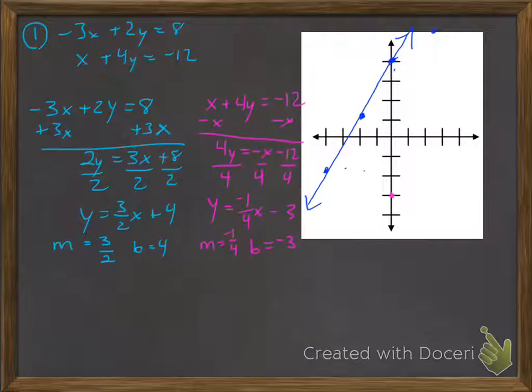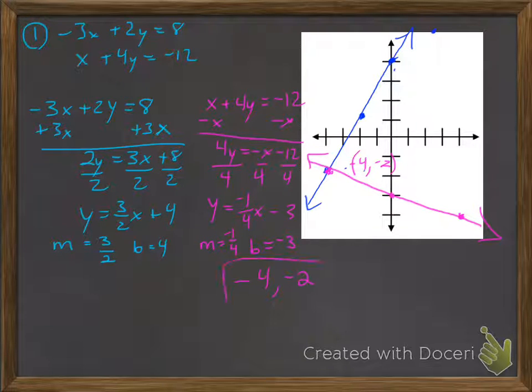So I'm going to plot my y-intercept first, rise down 1 to the right 4, rise up 1 to the left 4. And you see right there that they intersect at that point. They're intersecting at this point, and that point is negative 4, negative 2. So that means where they intersect is my solution. My solution is negative 4, negative 2, and it's a coordinate.